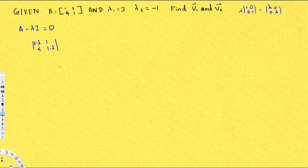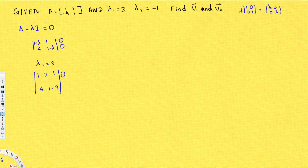Now let's begin with λ1=3. Substituting into (A - λI), we get [1-3, 1; 4, 1-3], which simplifies to [-2, 1; 4, -2], and we set this equal to 0 on the other side as a null space problem.